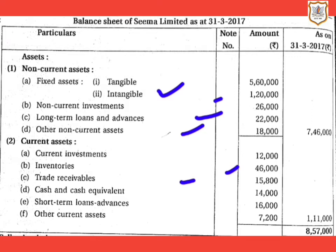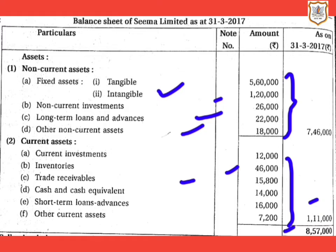Now we will total all the non-current assets: 5 lakh 60,000 plus 1 lakh 20,000 plus 26,000 plus 22,000 plus 18,000, giving a total of 7 lakh 46,000. If you total all the current assets, you get 1 lakh 11,000. So our total assets is 8 lakh 57,000. You just have to remember the format and show each item accordingly.